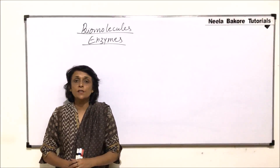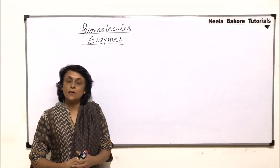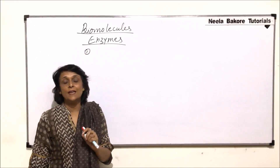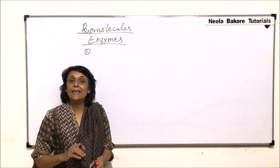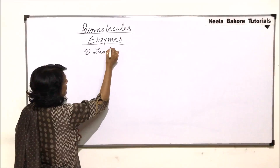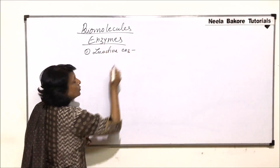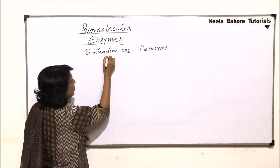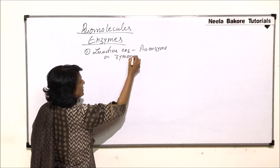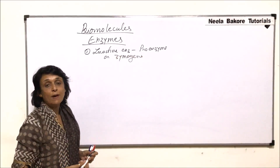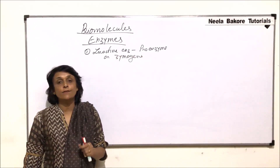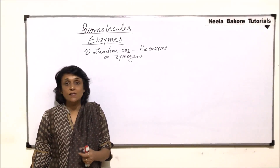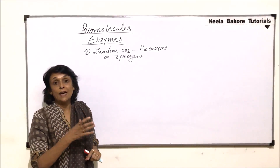In this video we will discuss certain important and interesting things about enzymes in general. The first is most of the enzymes are secreted in their inactive forms. Inactive enzymes are known as pro-enzymes or zymogens. There are different reasons why these enzymes are produced in their inactive form. For example, pepsin is a proteolytic enzyme — it digests proteins and it is a strong enzyme.